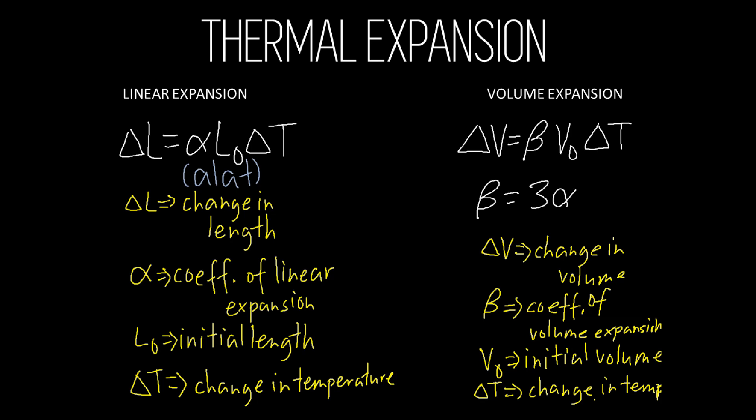Now we have the volume expansion. It is the change in volume of a substance due to a change in temperature. It is given by this formula: delta V is equal to beta times V0 times delta T. Beta is thrice the linear expansion coefficient — that is, beta equals 3 times alpha. Delta V is the change in volume, V0 is the original volume, and delta T is the change in temperature.